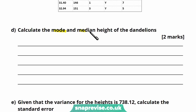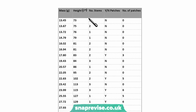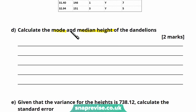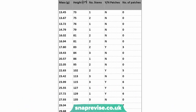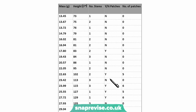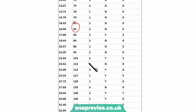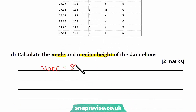The next part says calculate the mode and median height of the dandelions from the table of 20 plants. The mode is the most common value. The data has been put in order, which makes it easier — go through and circle any values that appear more than once. Here, 81 centimetres appears twice and is the only value that does, so the mode equals 81 centimetres.